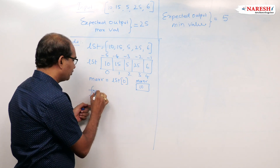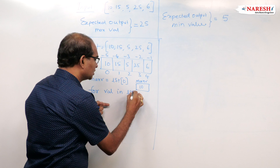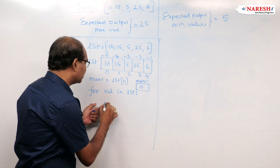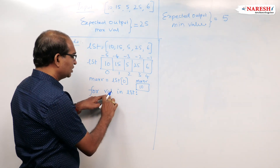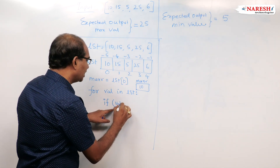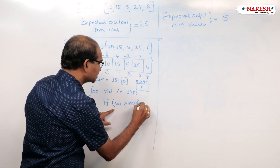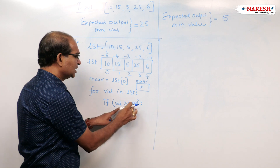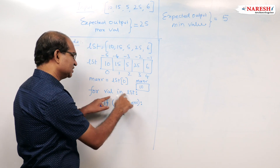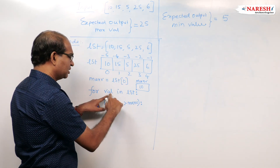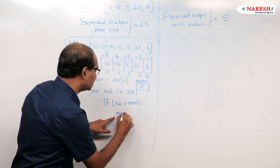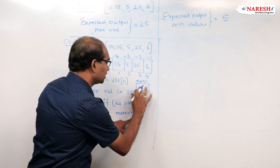I write: for value in LST, with an indentation block: if value greater than max_v. The for loop takes the first value of LST into val — that is 10. 10 greater than 10 is false, so control goes back to the loop. Second value 15: 15 greater than 10 is true, so max_v is updated with value, becoming 15.